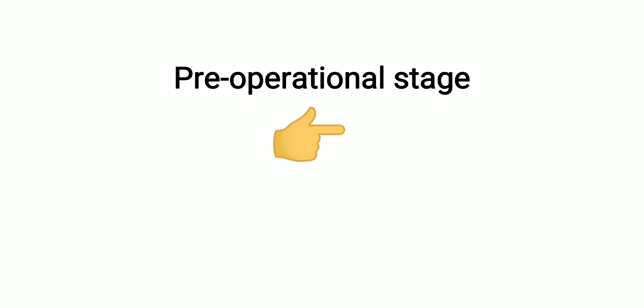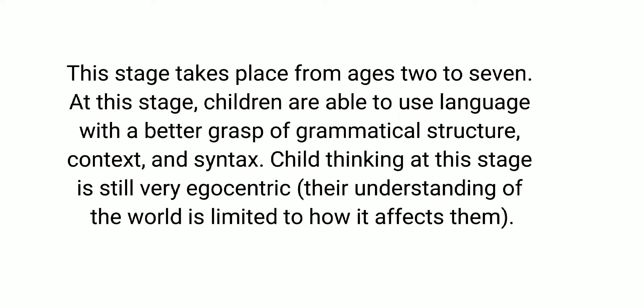The preoperational stage takes place from ages 2 to 7. At this stage, children are able to use language with a better grasp of grammatical structure, context, and syntax. Child thinking at this stage is still very egocentric — their understanding of the world is limited to how it affects them.